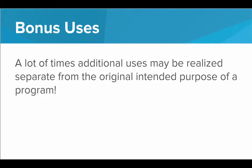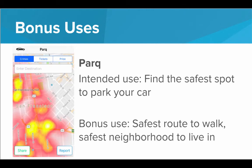What's cool is that a lot of times additional uses may be realized separate from the original intended purpose of the program. For example, when I was in college, a couple of friends and I made a program that visualized crime data in a city. The intended purpose was so that you could find the safest possible spot to park your car. It would visualize as a heat map all the most dangerous places in the city. But when people started using it, we found a lot of bonus uses — people used it to find the safest route to walk home, or the safest neighborhood to live in.